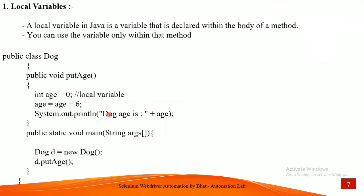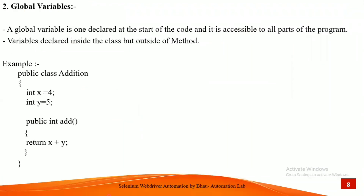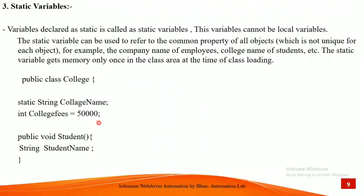Now we will see static variables. We need to declare a variable as static when the value never changes — like company name, employee name, college name. These types of values in your project can be declared as static variables. The static variable can be a common property of all objects that is not unique for each object. A variable declared with the static keyword is called a static variable.